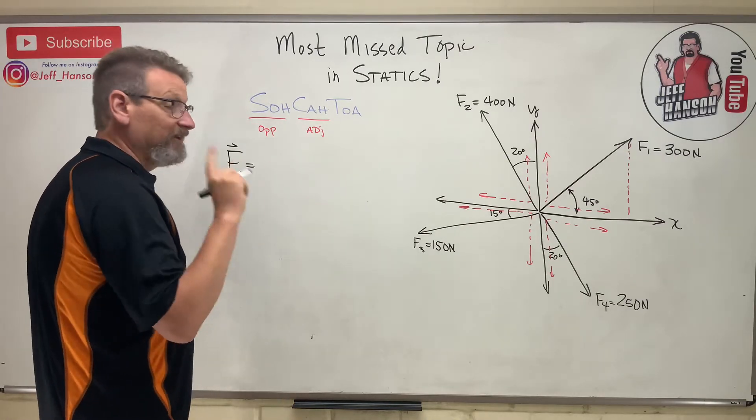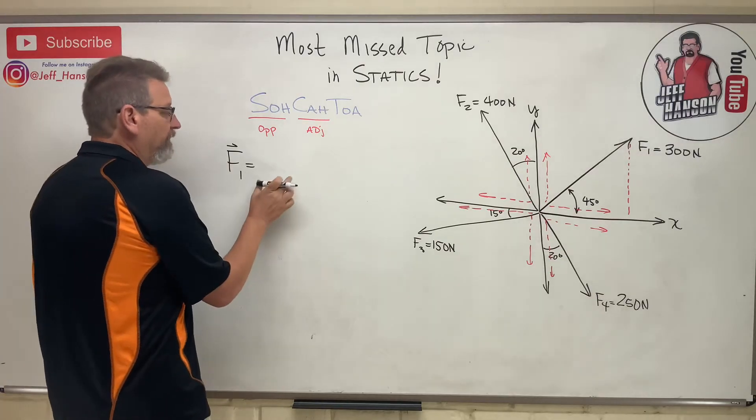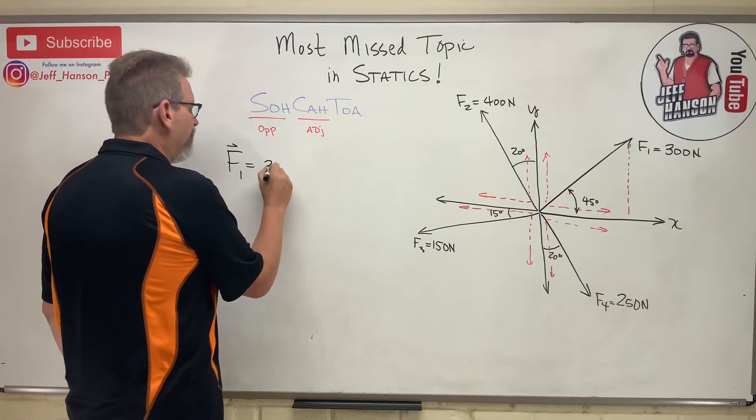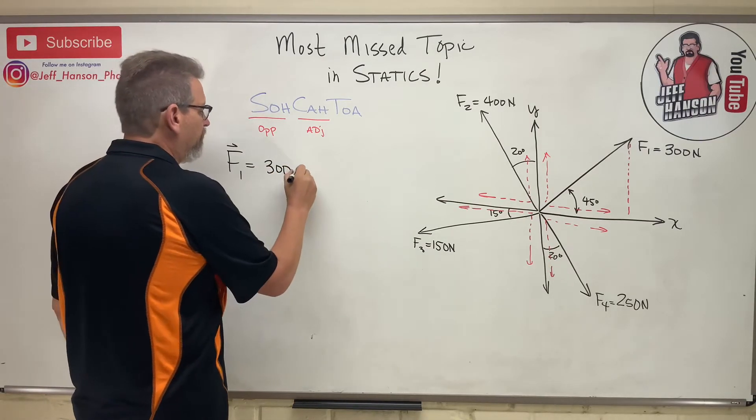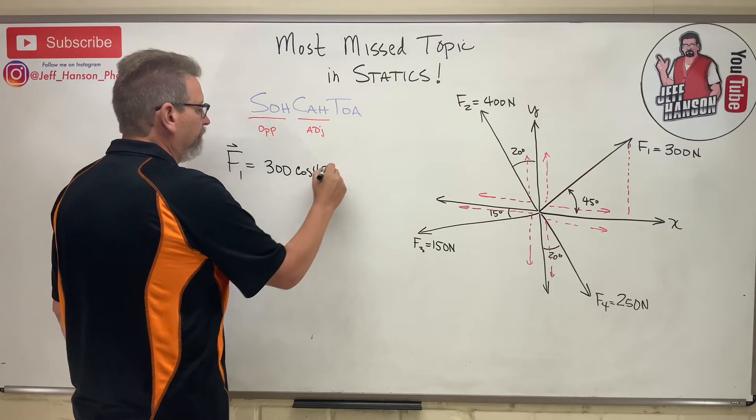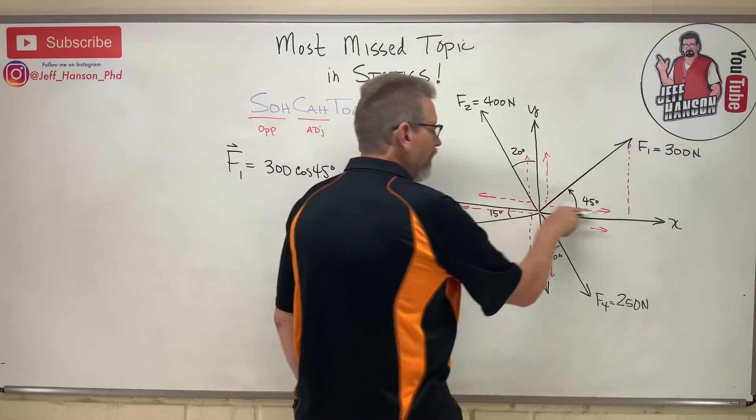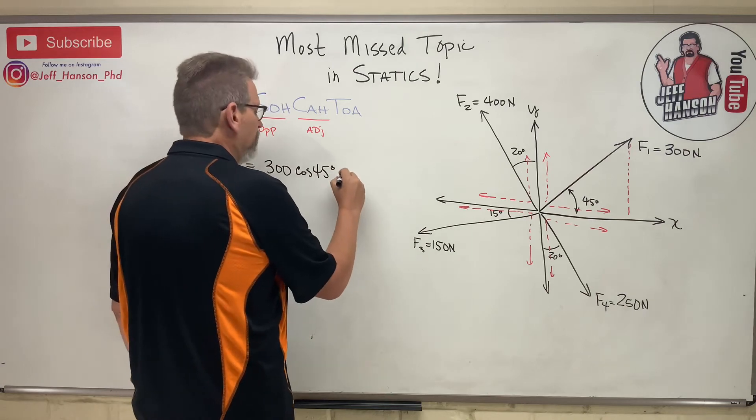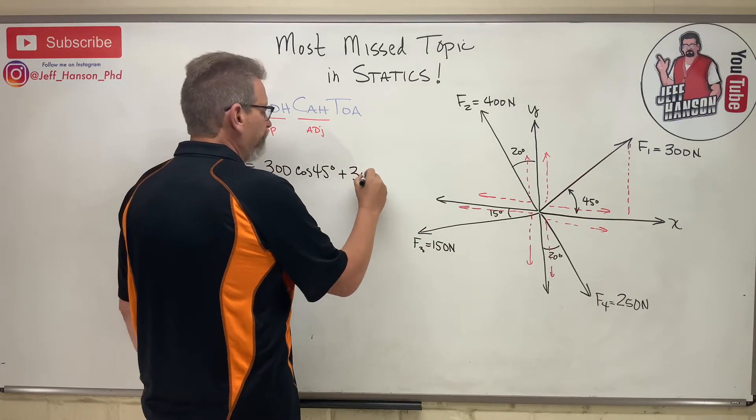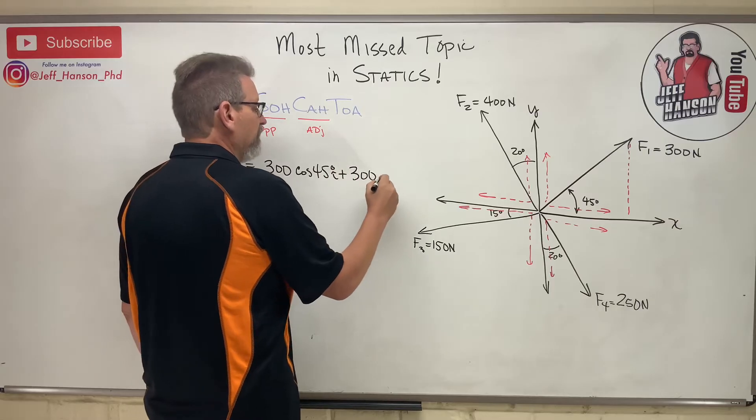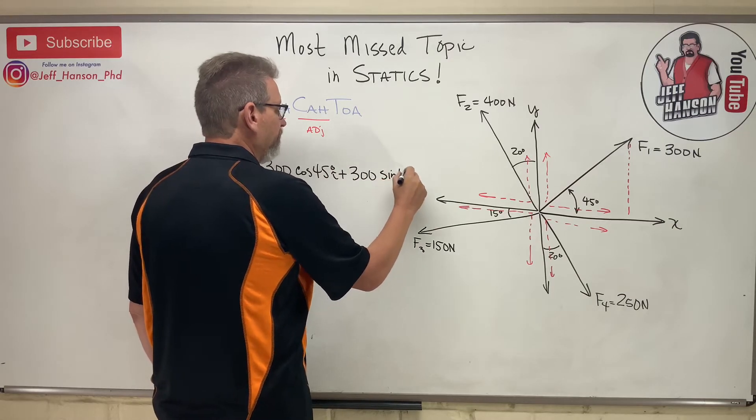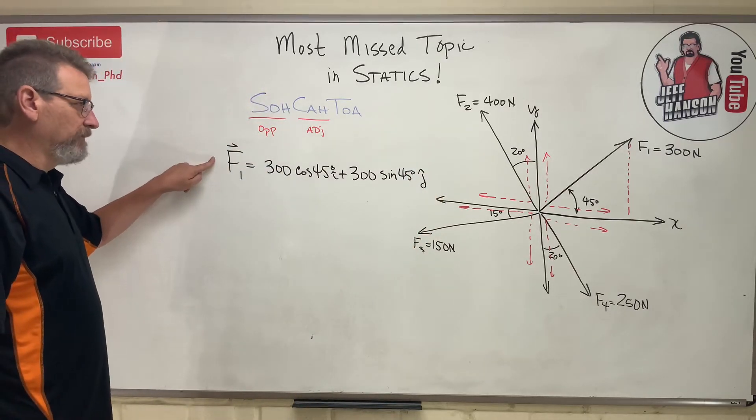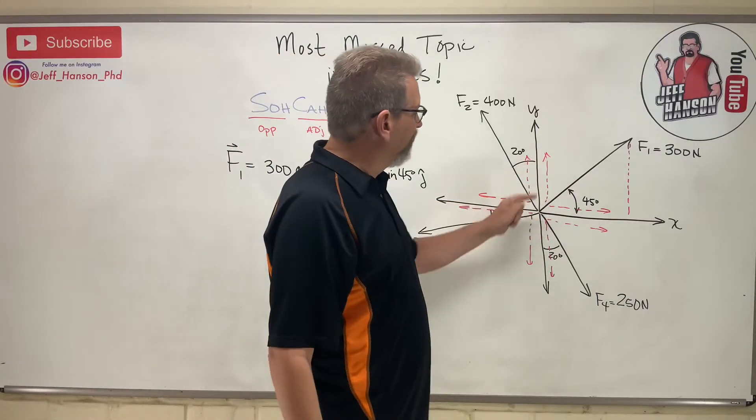F1 is equal to - because remember our whole thing is going to be trying to break these into Cartesian components, into i-j-k components - so I'm going to have the x and the y. So the x is going to be 300 times the cosine of 45, and that's going in the positive x direction. And this vector is going uphill, so it's in the positive y direction. So plus 300 - oh I forgot to put an i hat on there - 300 sine 45 j hat. So there's vector F1, and the two components: this one's positive, that one's positive.